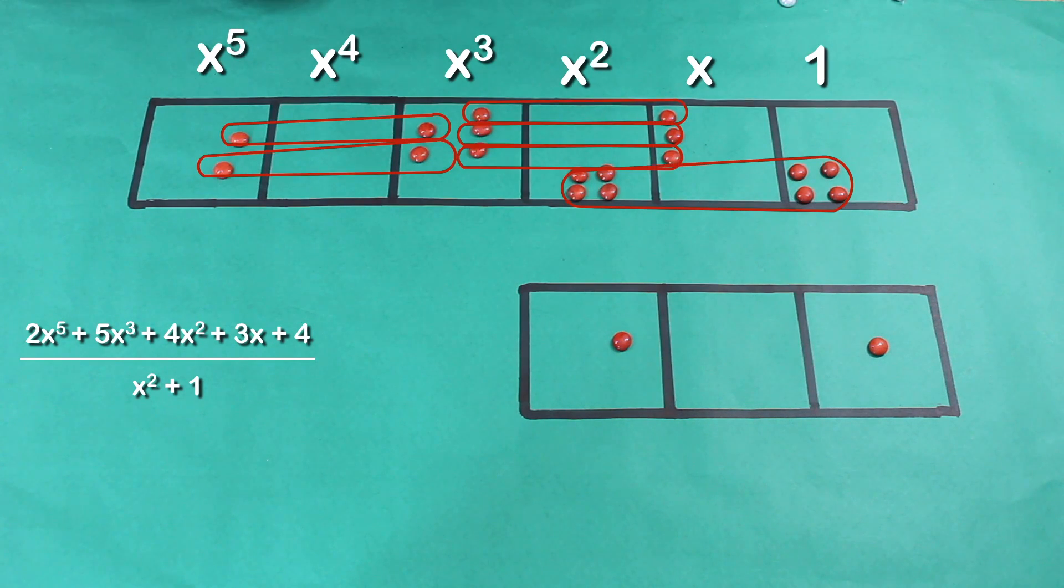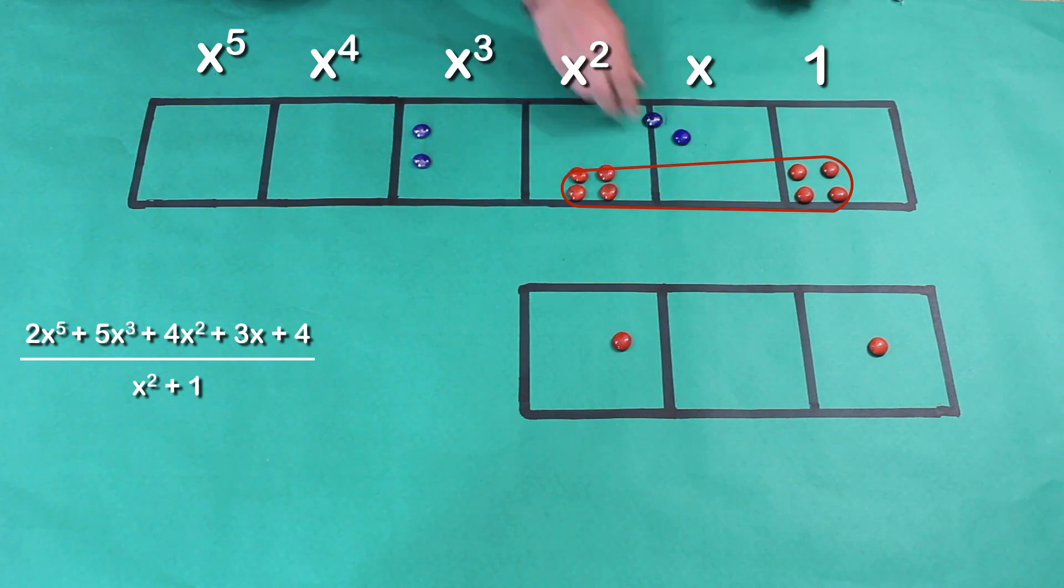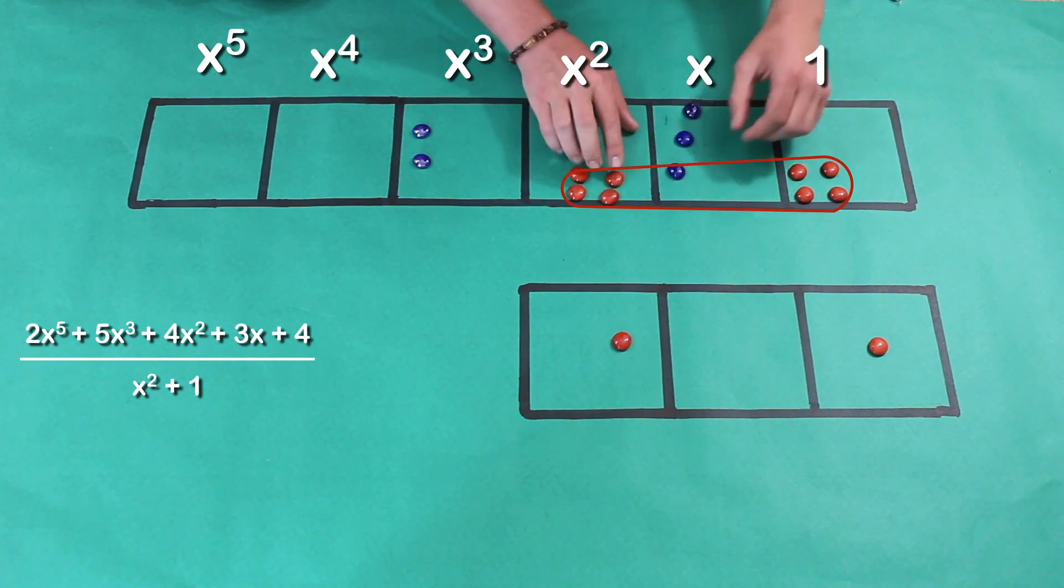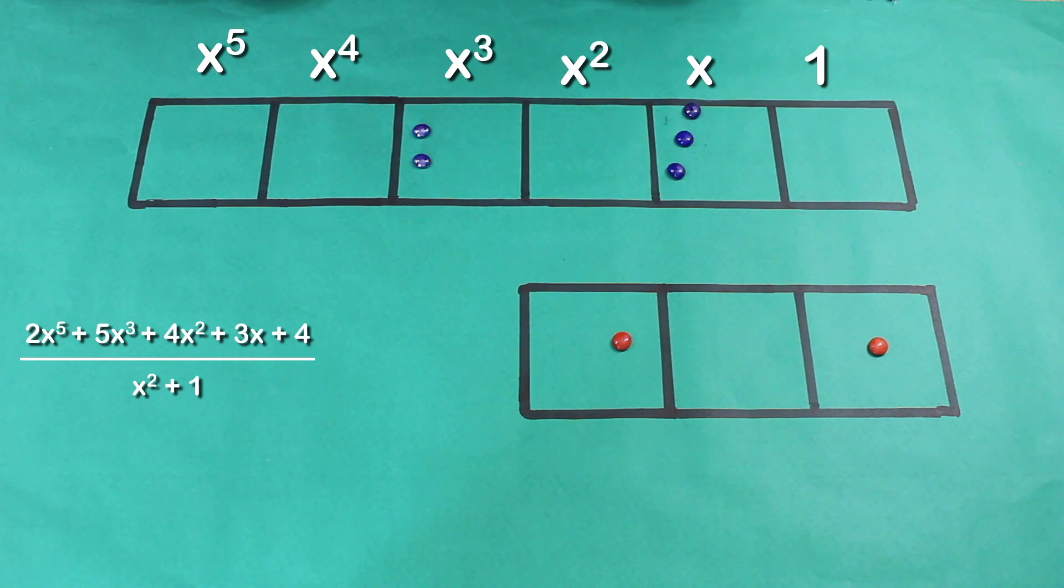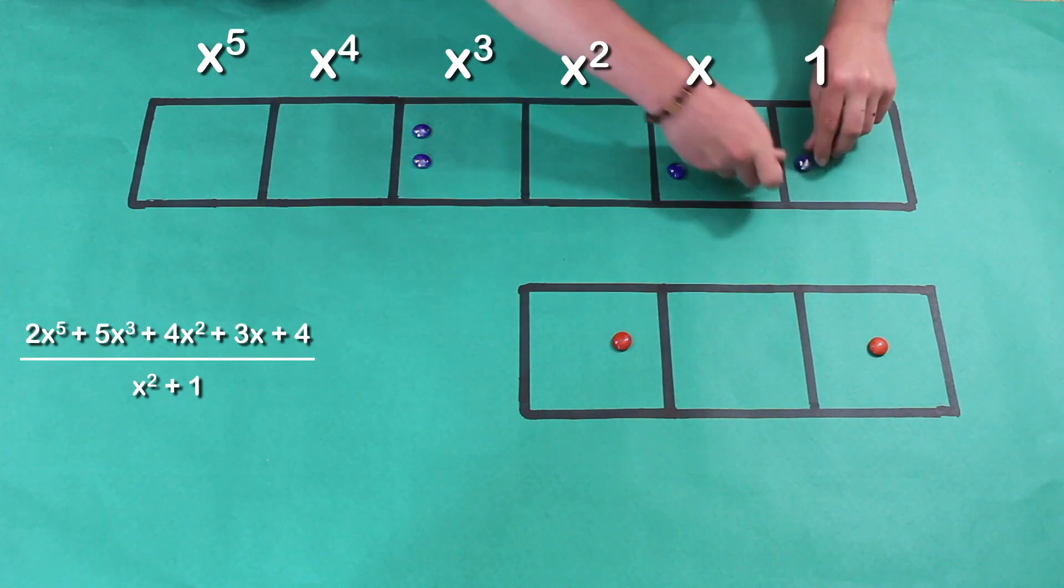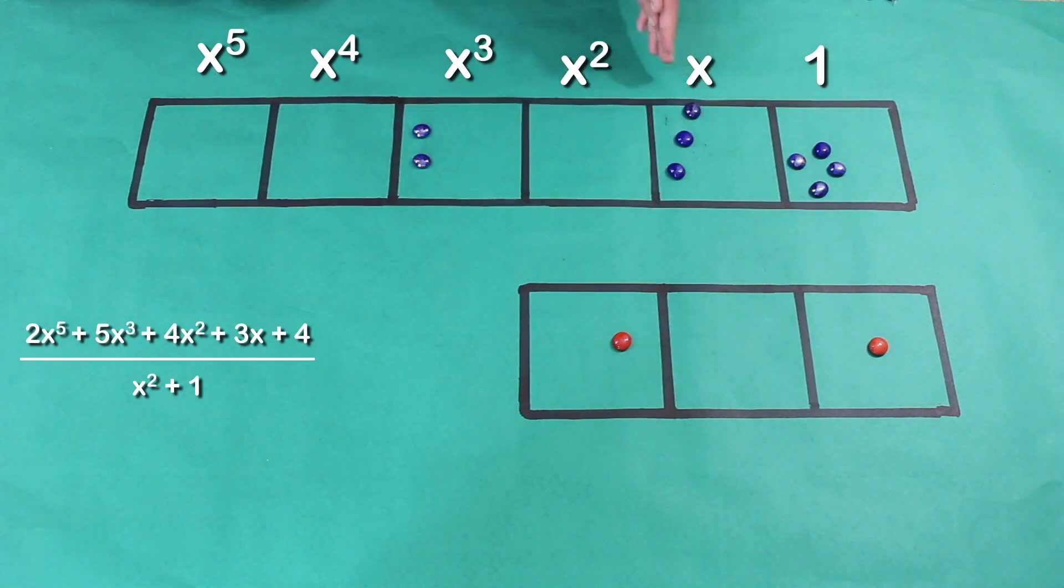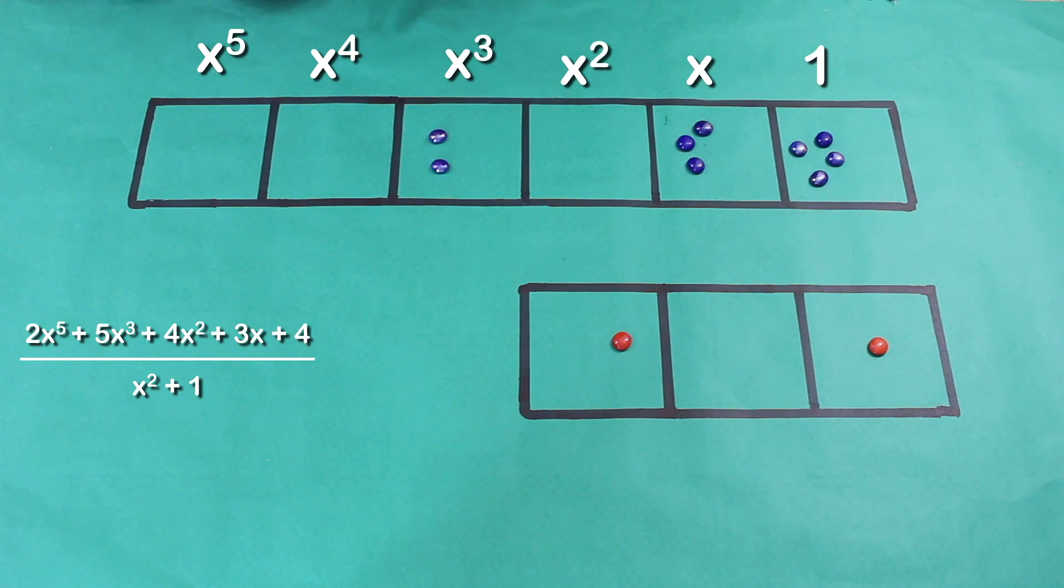Here's all the patterns that we've found. So, we replace them with these blue guys. We have this ready. Oh, well, first time we were doing a video. And there's your answer. Two X to the fifth, plus five X cubed, plus four X squared, plus three X, plus four, divided by X squared, plus one, equals two X cubed, plus three X, plus four.